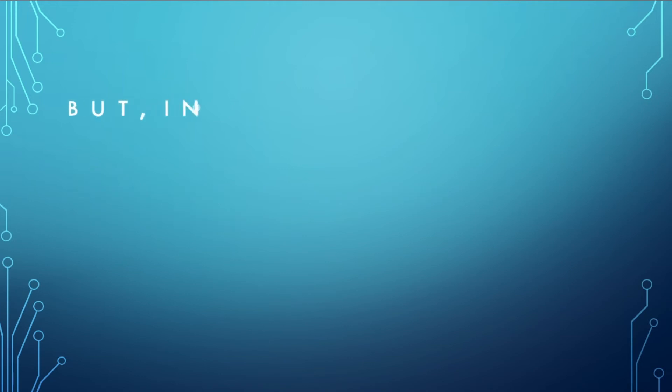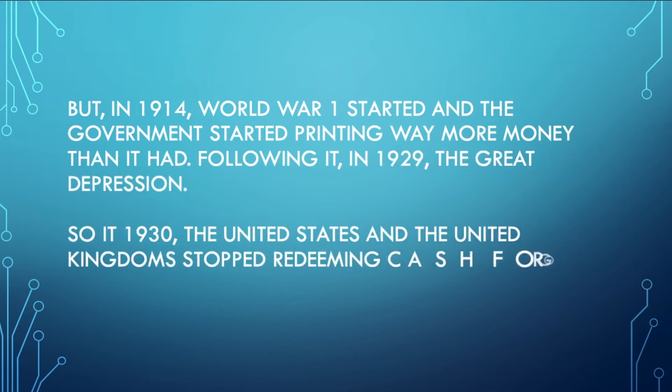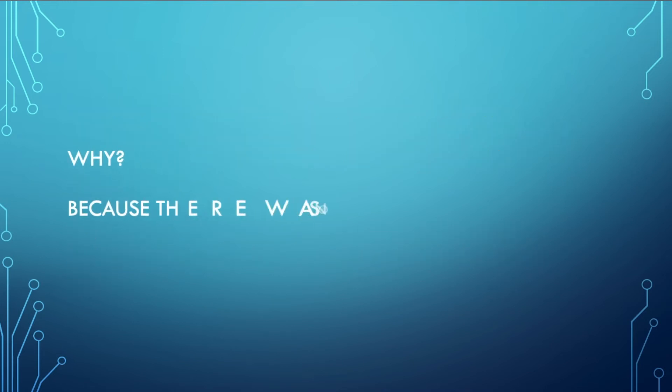But World War I started and the government started printing way more money than it had, following the Great Depression. So the United States and the United Kingdom stopped redeeming cash for gold coins. Why? Because there was not enough gold to back the amount of money.